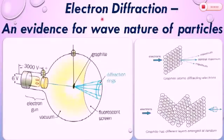As we have studied that electron diffraction is evidence for wave nature of particles, we can reproduce the results of Davison and Germer in laboratory using the electron tube.